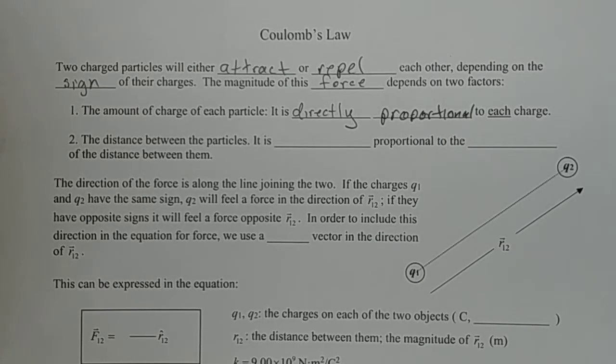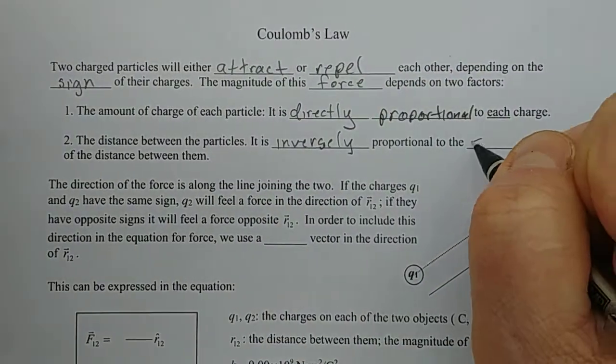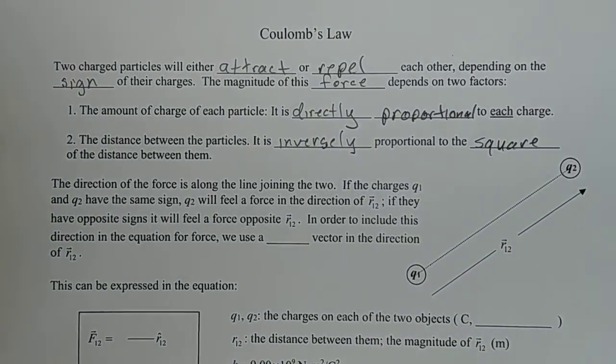The further away you get from the source of that attraction or repulsion, as that ability gets spread out over a bigger and bigger sphere, the area of the sphere is 4 pi r squared or proportional to the square of the radius. So how much it's spread out is proportional to the square of the radius. But if it's spread out, that means it's making it smaller. So as you get a bigger radius, you get a smaller force. The force is going to be inversely proportional to the square of the distance between them.